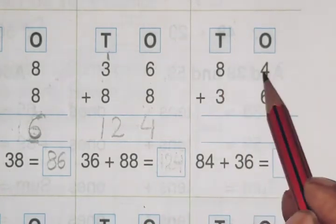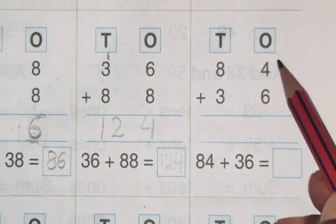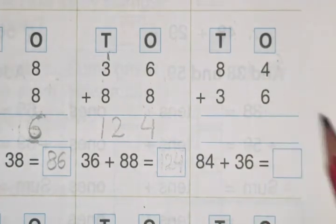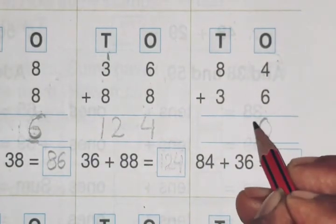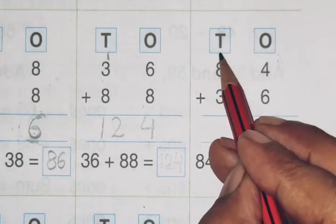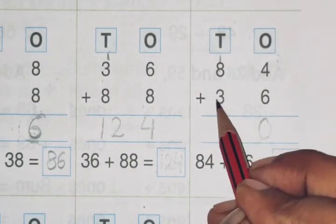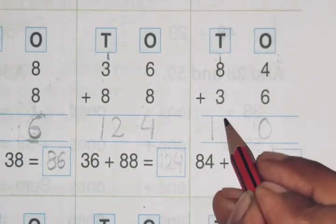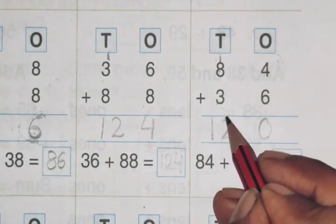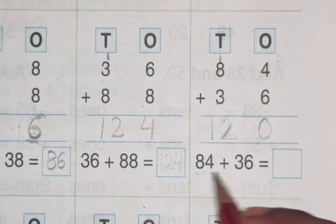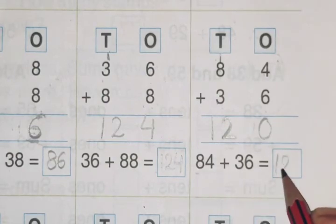Now 84 and 36. This is 4 and 6. We will add 4 plus 6 is 10. 10 ka 0 here, and 10 ka 1 is here. 8 plus 3 is 11, plus 1 is 12. And 12 is here. So 84 plus 36 is 120.